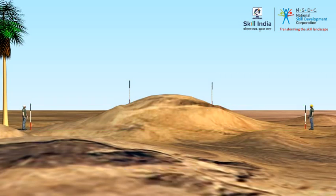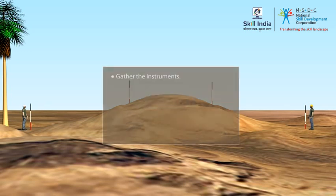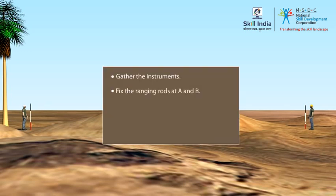Therefore, for measuring the distance between A and B that are not intervisible, you must follow these steps of indirect ranging: gather the instruments, fix the ranging rods at A and B, select two intermediate points M1 and N1, repeat the aligning process, and measure the length of the line AB.